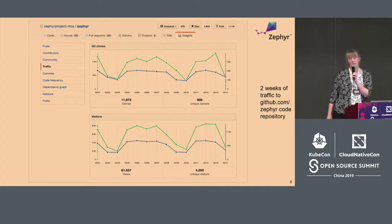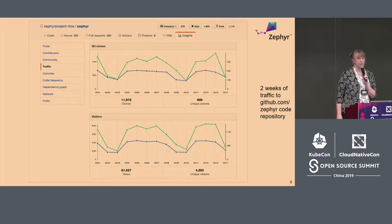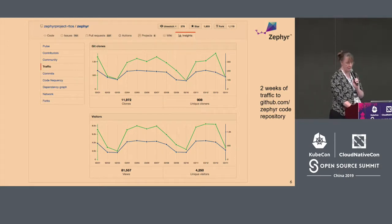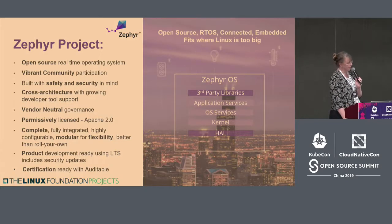81,000 — that's a lot of people looking at the code, and that's just in a two-week period. So that's kind of encouraging.